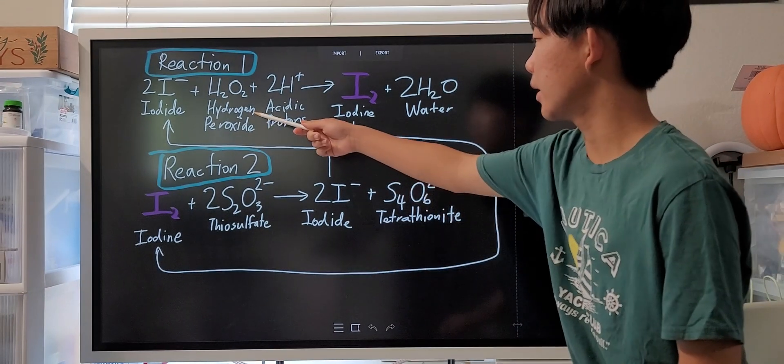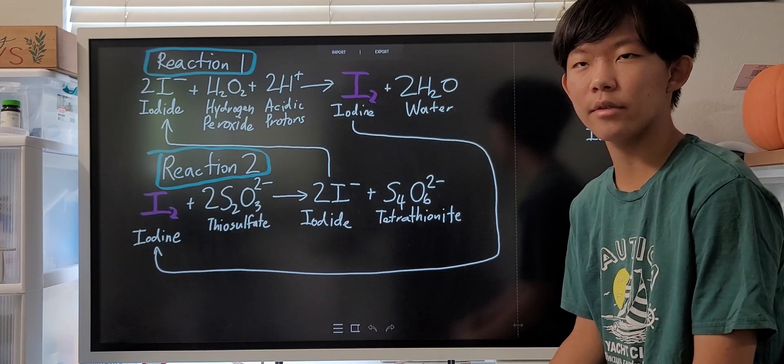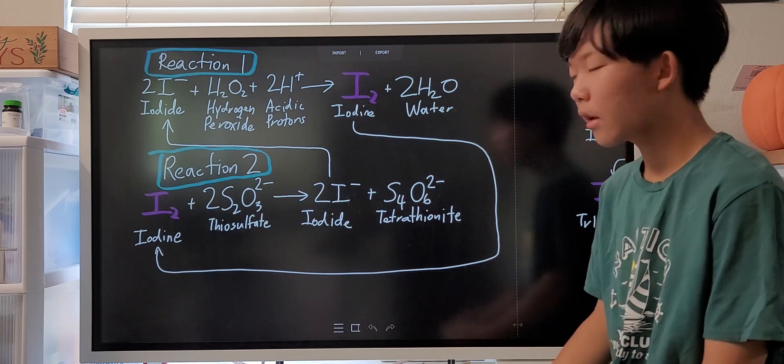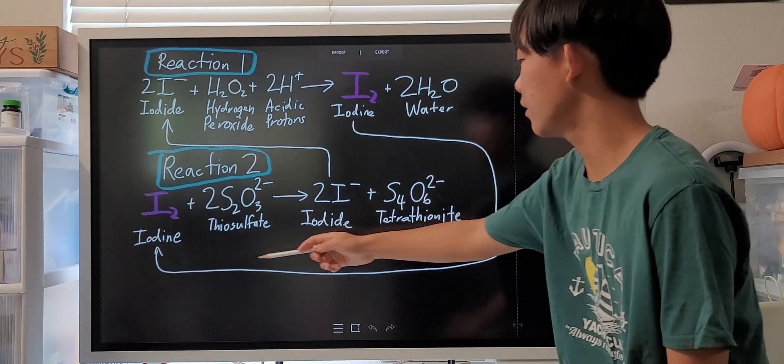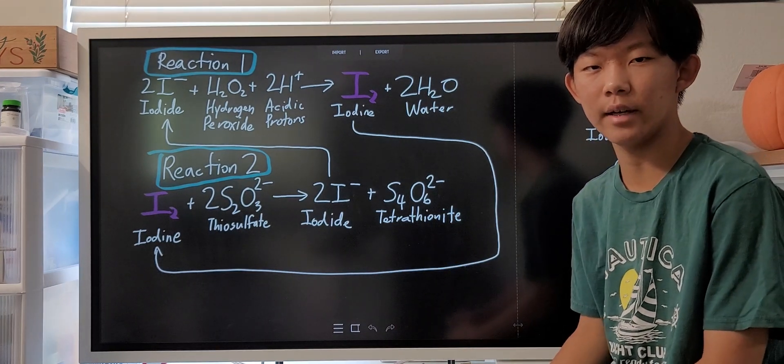These two reactions immediately started the moment I mixed the two solutions. The hydrogen peroxide and the acidic protons given off by citric acid reacted with the iodide ions to produce aqueous iodine. However,